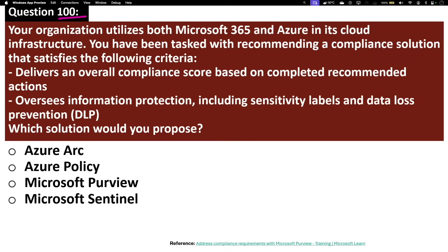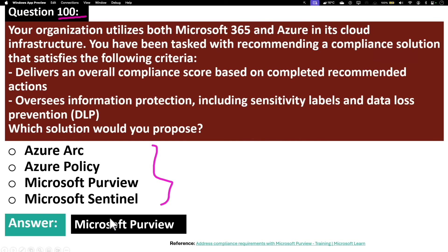Question 100. Your organization utilizes both Microsoft 365 and Azure in its cloud infrastructure. You have been tasked with recommending a compliant solution that delivers an overall compliance score based on completed recommended actions, and oversees information protection including sensitivity labels and data loss prevention. The correct answer is Microsoft Purview. Microsoft Purview is a data classification solution that helps organizations manage and oversee their data assets, covered in detail on question 11. I hope the information in this video helps you clear the exam or study security in general. See you on the next one — take care.